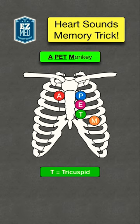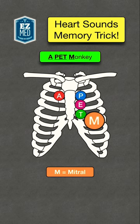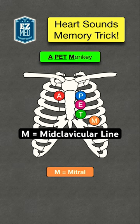Finally we have M, which stands for the mitral area. This is located in the left fifth intercostal space, midclavicular line. And you can use the M for mitral to remember midclavicular.